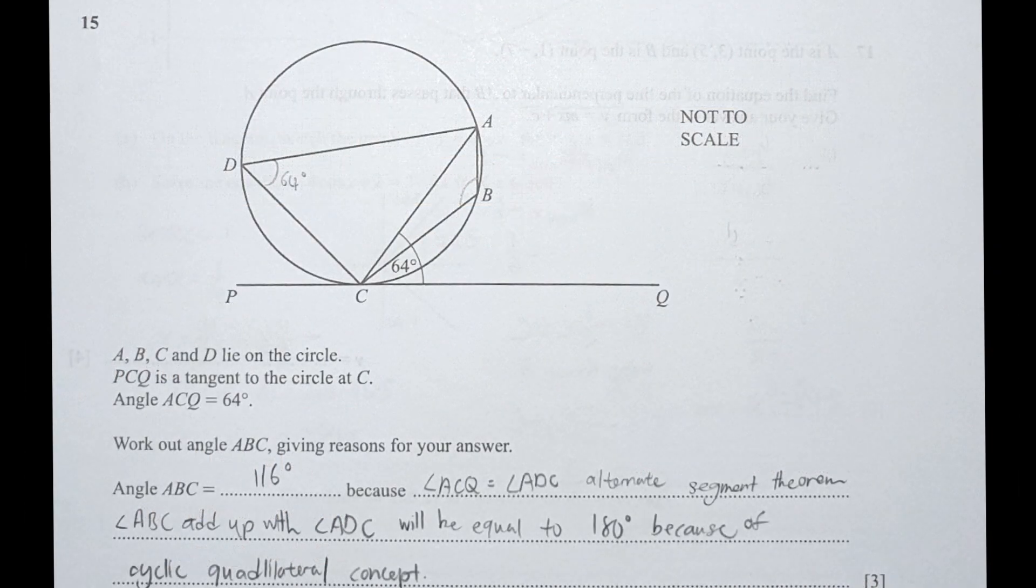Work out angle ABC, giving reasons. Angle ABC is 116. The reason: angle ACQ equals angle ADC by the alternate segment theorem. Then I use the cyclic quadrilateral property where angle ADC plus ABC equals 180. So 180 minus 64 gives ABC as 116. Detailed explanation is written on the paper as shown above.